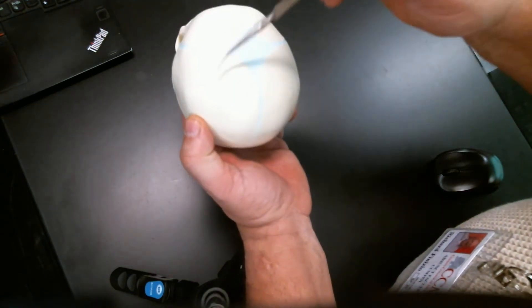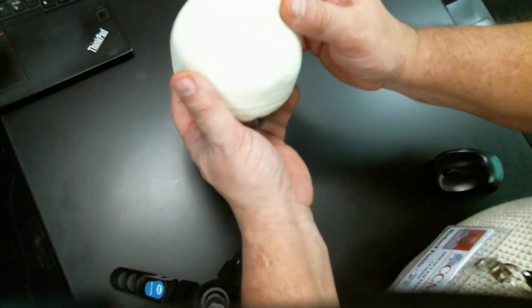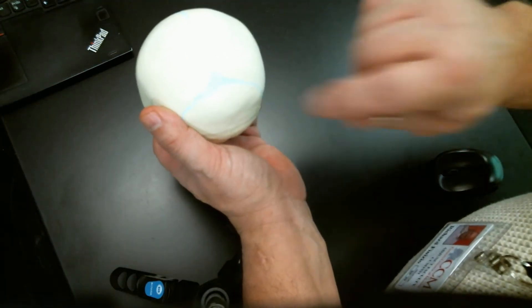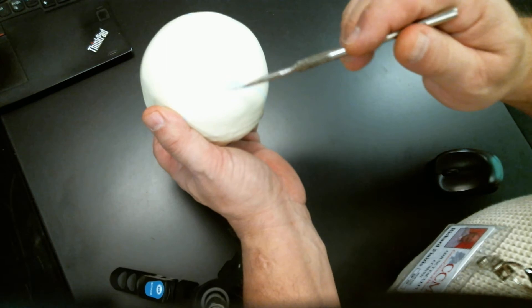You still have parietal bones. And you still have an occipital bone. So this would be your posterior now. Your posterior fontanelle. Just above the occipital bone.